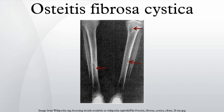Osteitis fibrosa cystica is defined as the classic skeletal manifestation of advanced hyperparathyroidism. Under the ICD-10 classification system, established by the World Health Organization, OFC is listed under category E21.0, primary hyperparathyroidism.